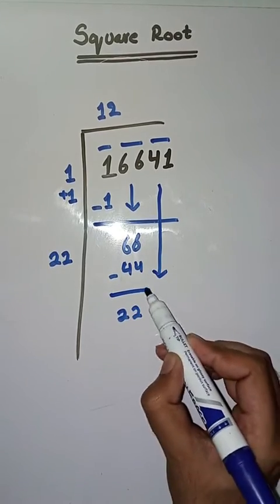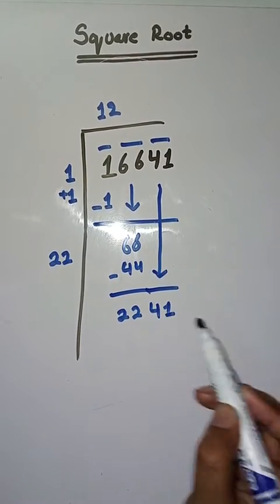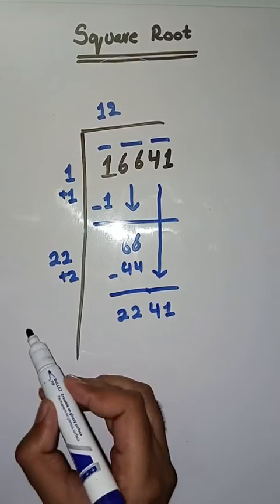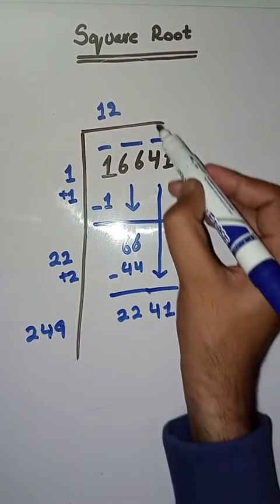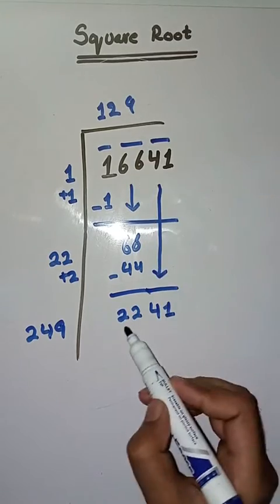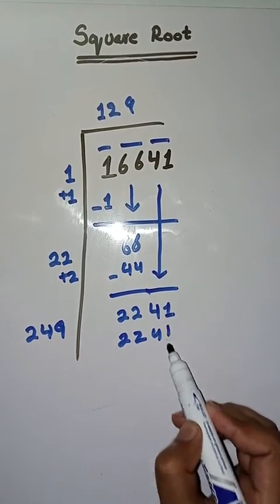Now we will take number 9. Two forty-nine times nine is twenty-two forty-one. So it's completely solved. Square root of 16,641 is 129.